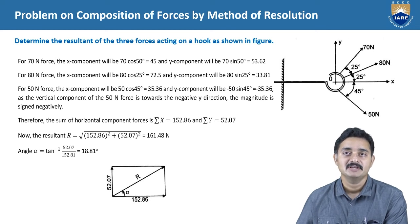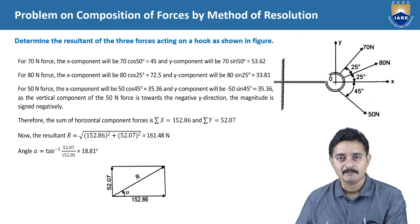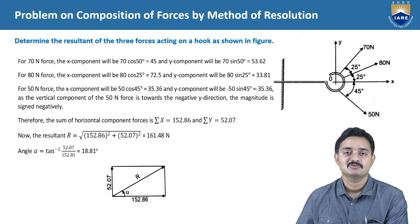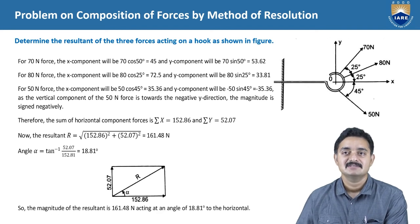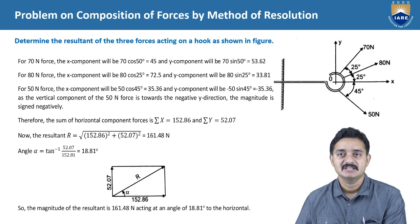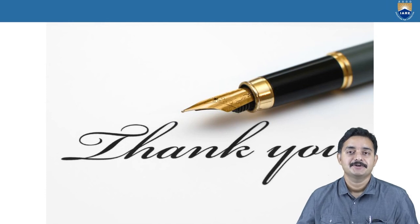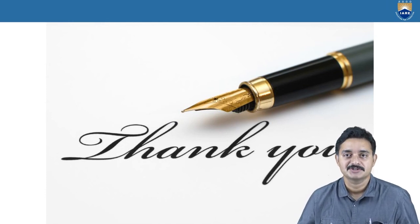If you observe carefully, the x-component and y-component of the resultant have obtained positive values. This symbolizes that the x-component is towards the positive x-axis direction and the y-component is towards the positive y-axis direction. So the resultant R will be acting towards the upper side of the horizontal. Hence, the inclination alpha can be placed accordingly. The magnitude of the resultant is 161.48 N acting at an angle of 18.82 degrees to the horizontal. In this way, we will be solving problems related to resultants. This concludes the session. Thank you.